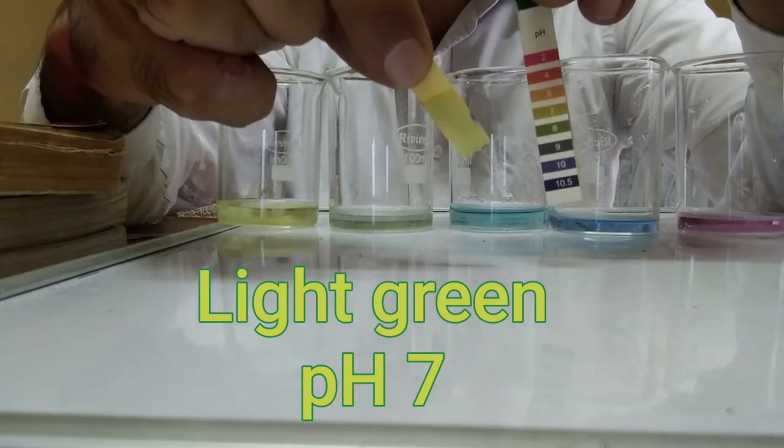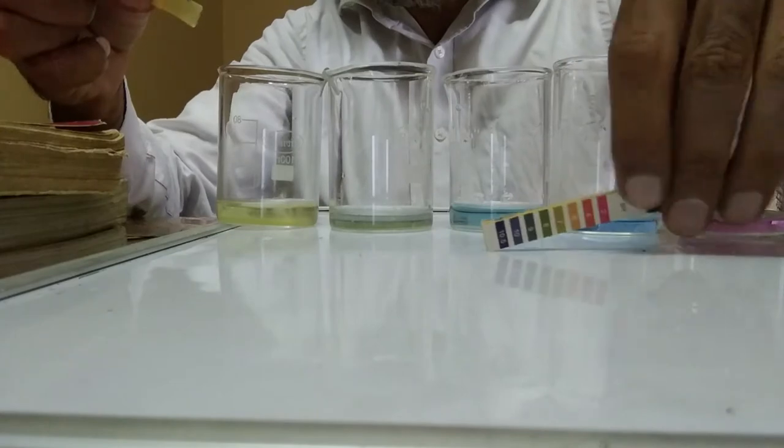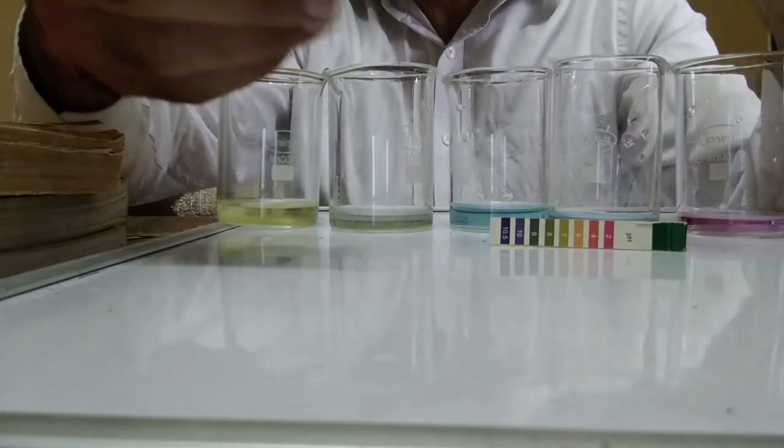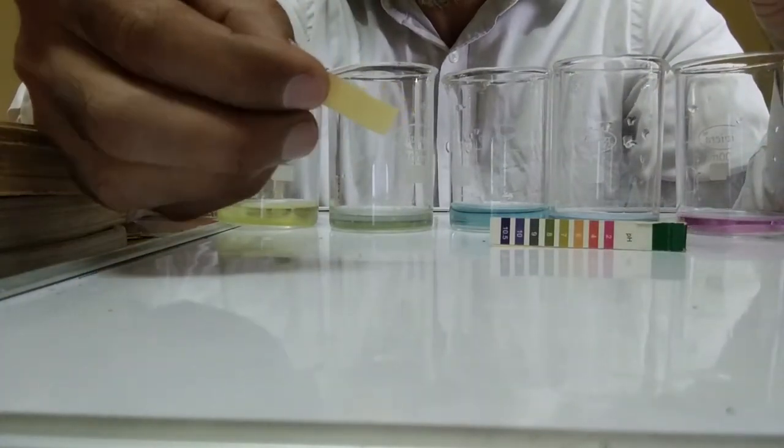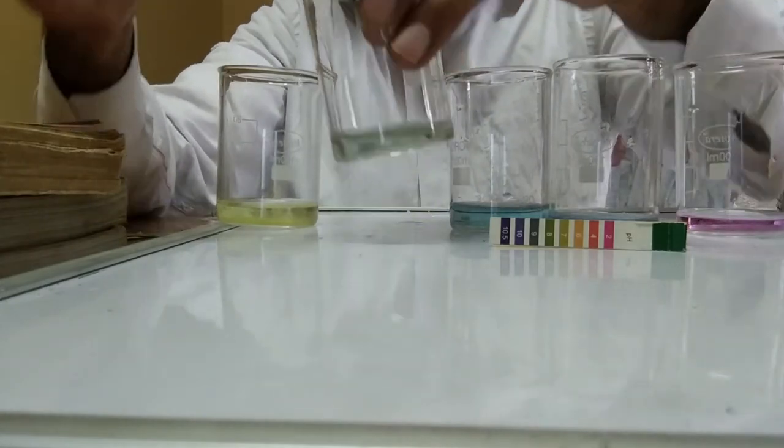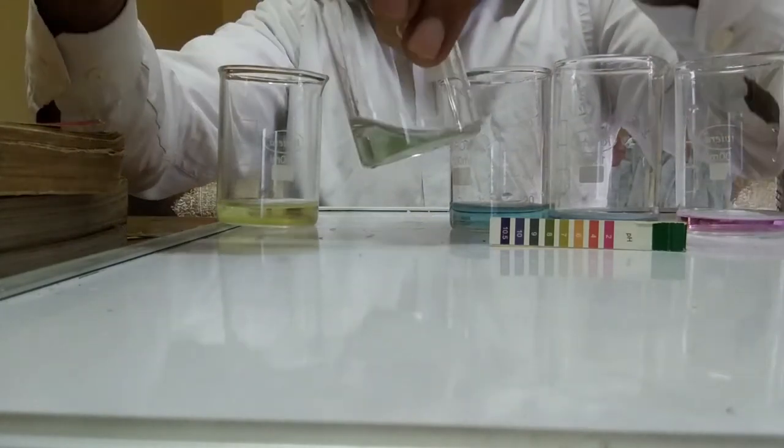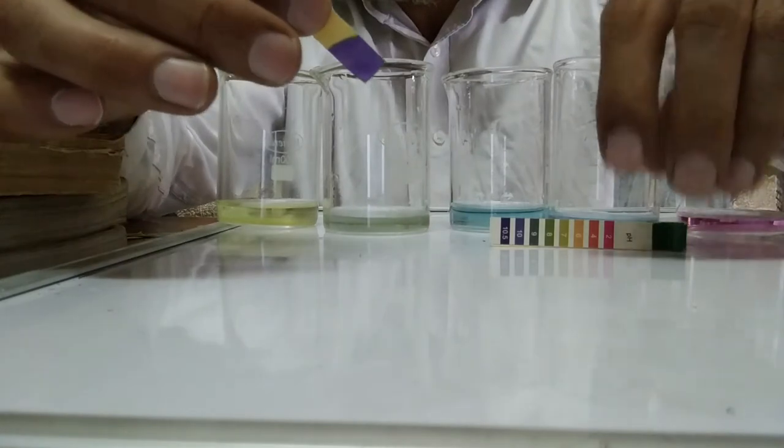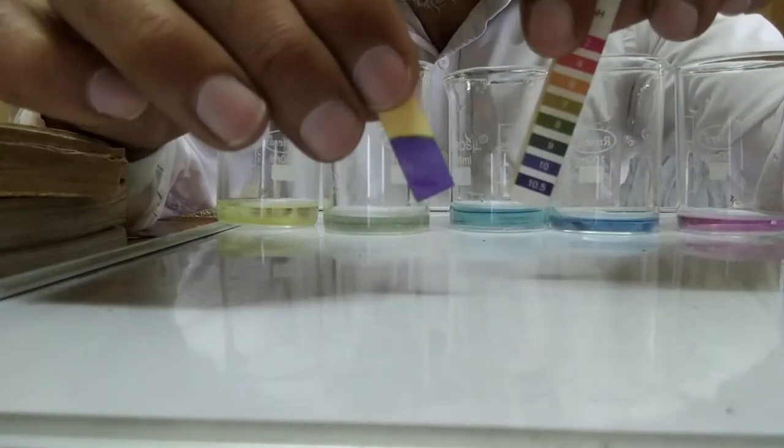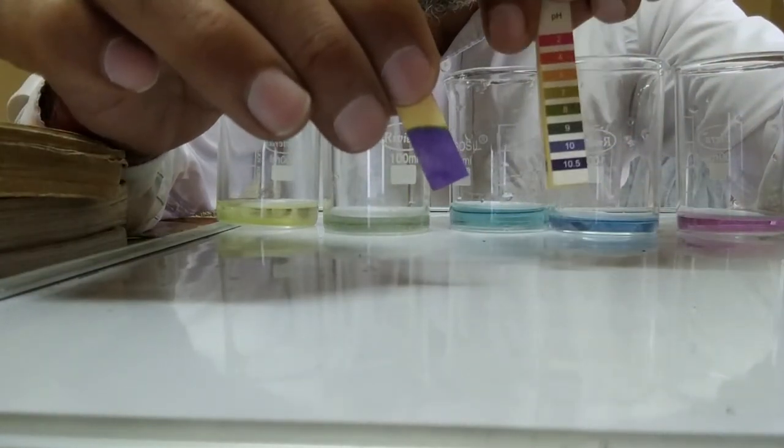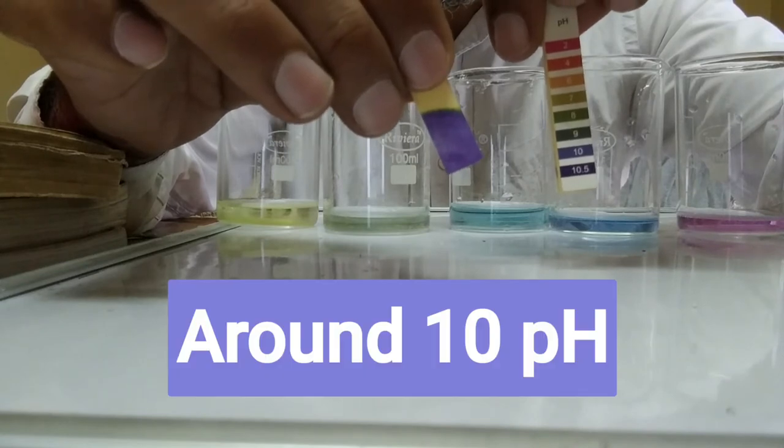Next one we had added a little bit of base into it. It should be producing bluish colour. Here we have got little light blue. pH of say around 9 or 10, so it is around 10.